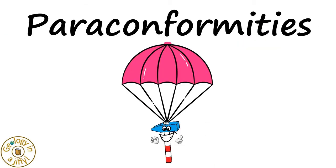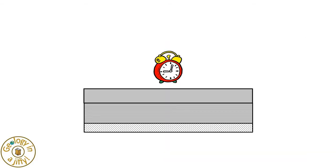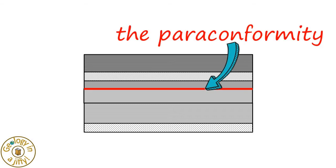Paraconformities are formed by a break in deposition. Parallel layers of sediment build up, but this stops for a while, then carries on again. There is no evidence of erosion in a paraconformity. The paraconformity is the break in deposition of parallel bedded sediments.